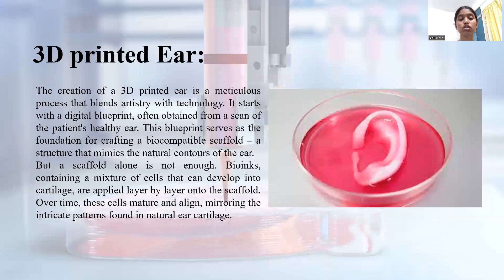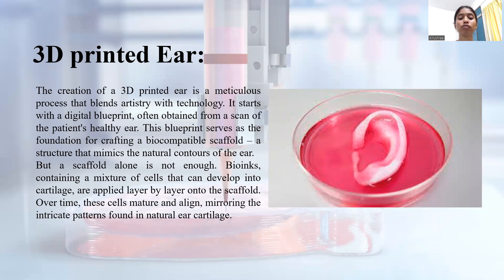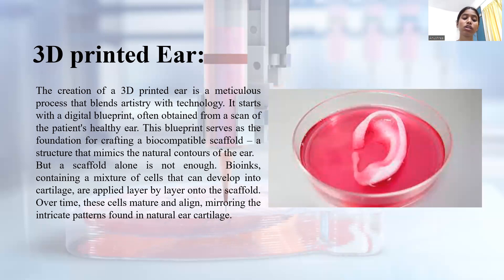The creation of a 3D printed ear is a meticulous process that blends artistry with technology. It starts with a digital blueprint of a human ear, often obtained from a scan of a patient's healthy ear. This blueprint serves as the foundation for crafting a biocompatible scaffold, a structure that mimics the natural contours of the ear. Bio inks containing a mixture of cells that can develop into cartilage are applied layer by layer onto the scaffold. Over time, these cells mature and align, mirroring the intricate patterns found in natural ear cartilage.